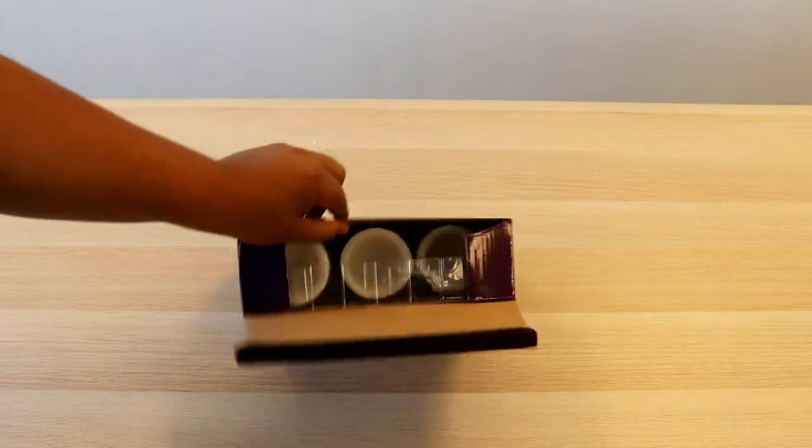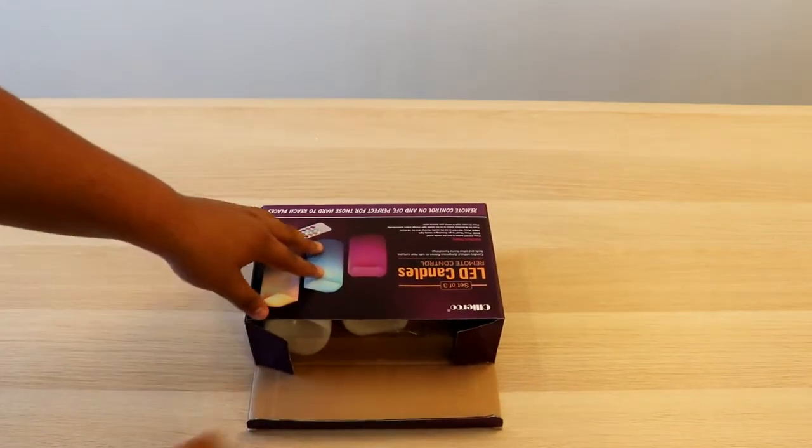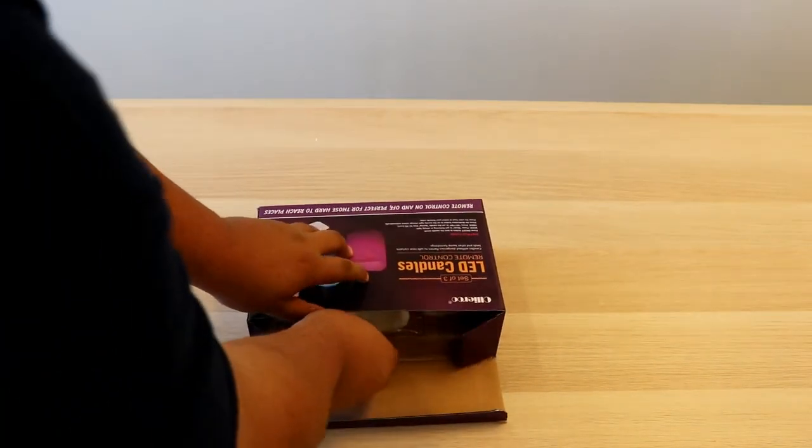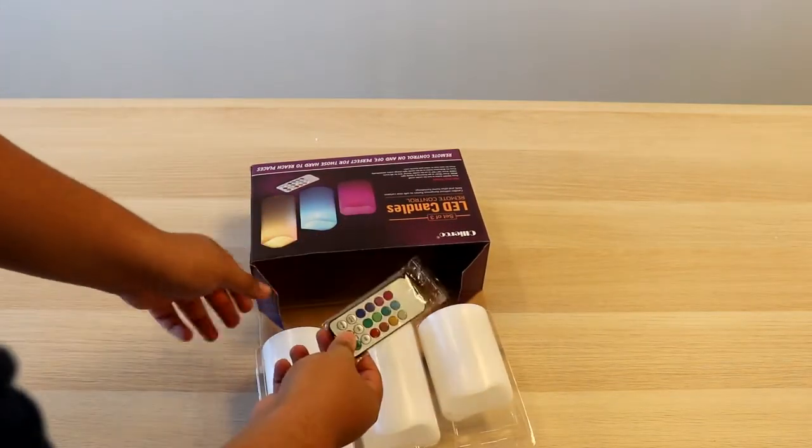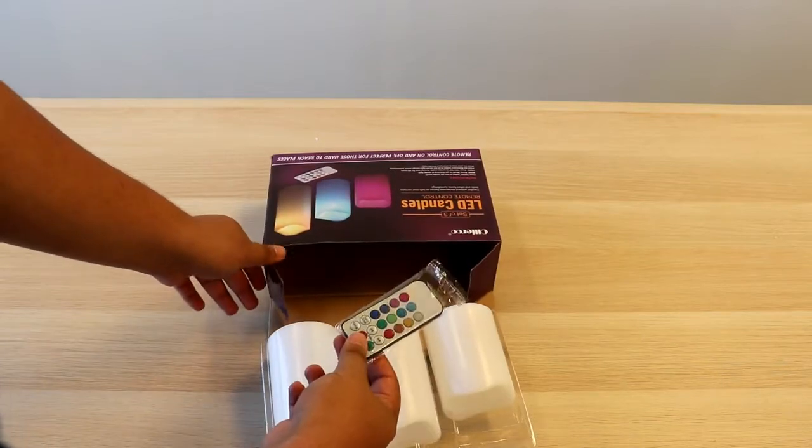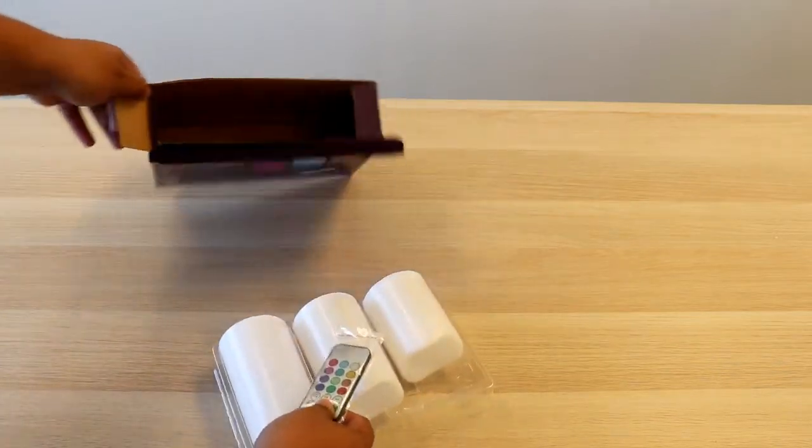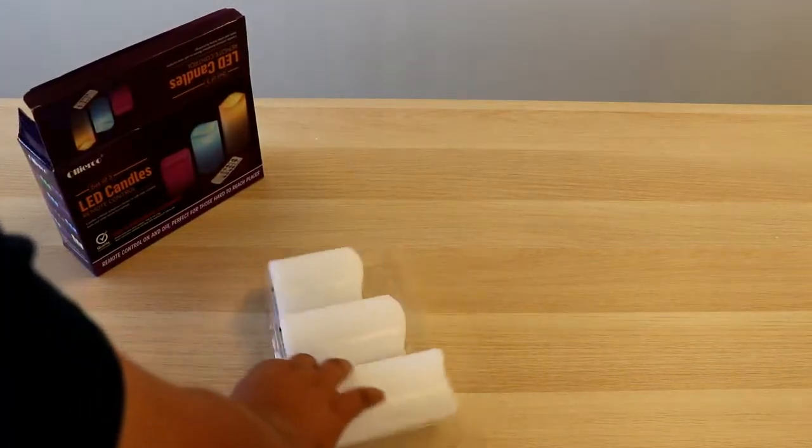If you want, you can lay them down to the side like this and pull it out. As you can see, you have your remote right here along with your three candles.